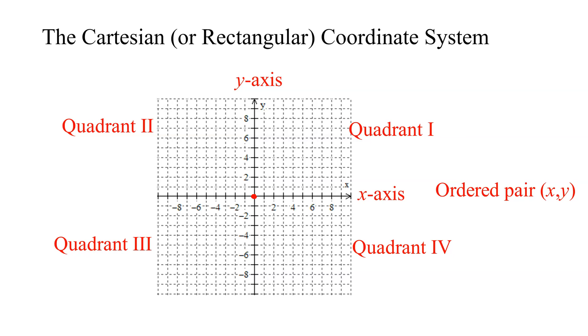And the most important point is right here, where the two axes intersect. And this is called the origin. So that point there is the origin. And it has the coordinates, the x-value is 0, and the y-value is 0. So its ordered pair is 0, 0. The reason why it's so important is that's where we start plotting every single point.